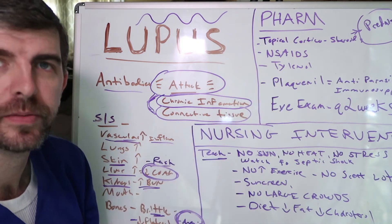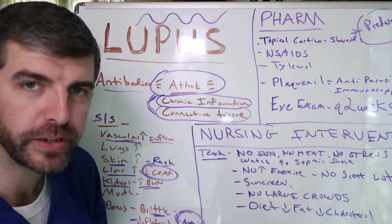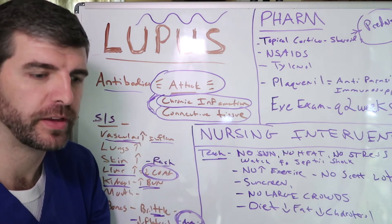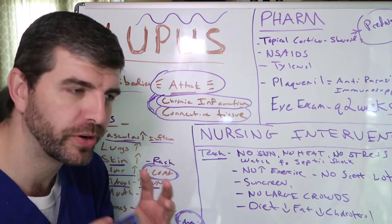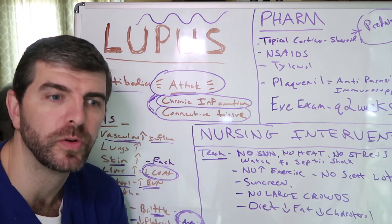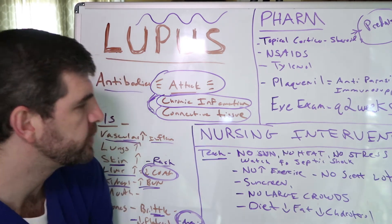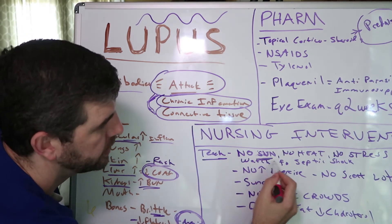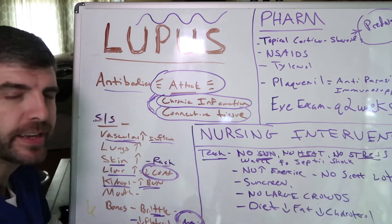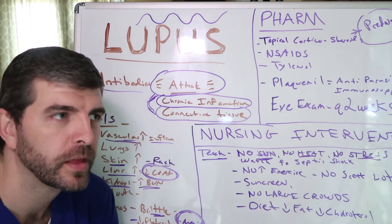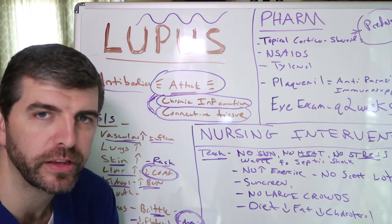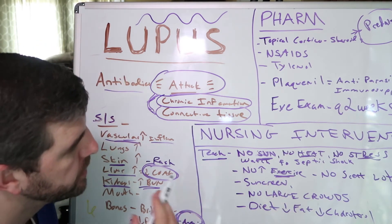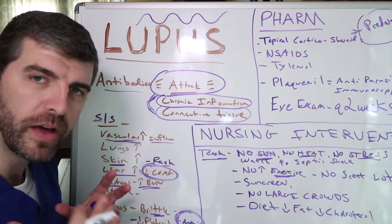Before we get into the pharmacology, let's talk about nursing interventions — what you're going to teach your patients. Nursing interventions are pretty much everything in nursing-style questions. You want to teach your patient with lupus: no sun, no heat, and no stress. Any of those cause inflammation, and it's hard for the body to repair itself when it's already chronically inflamed. Also tell them not to exercise too much — remember, it's all about the inflammation.